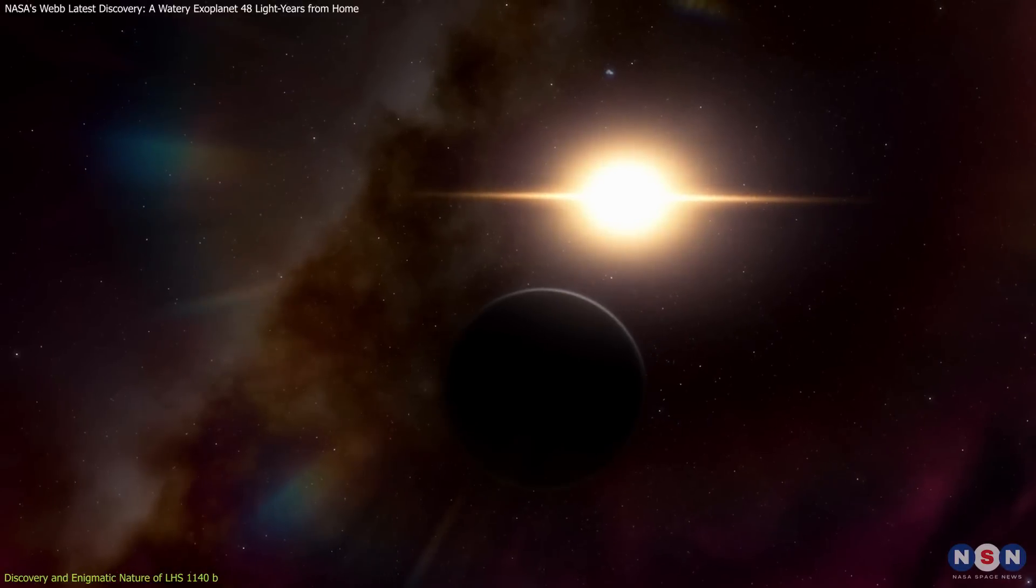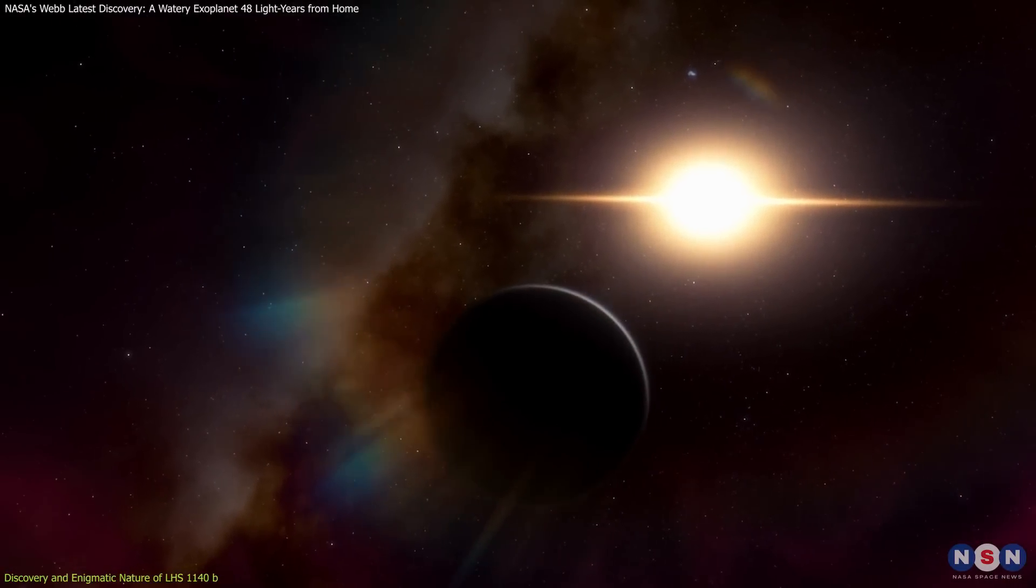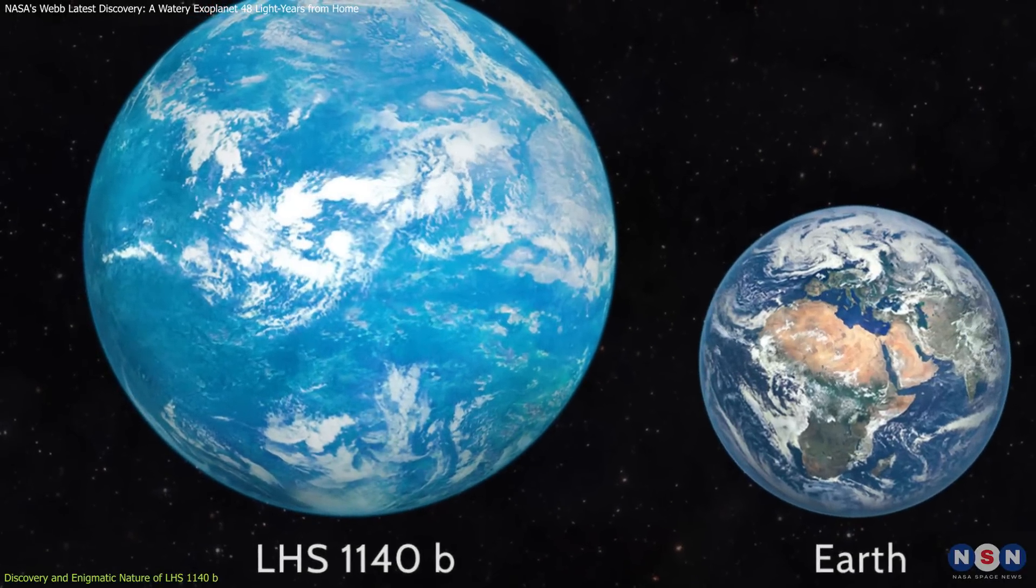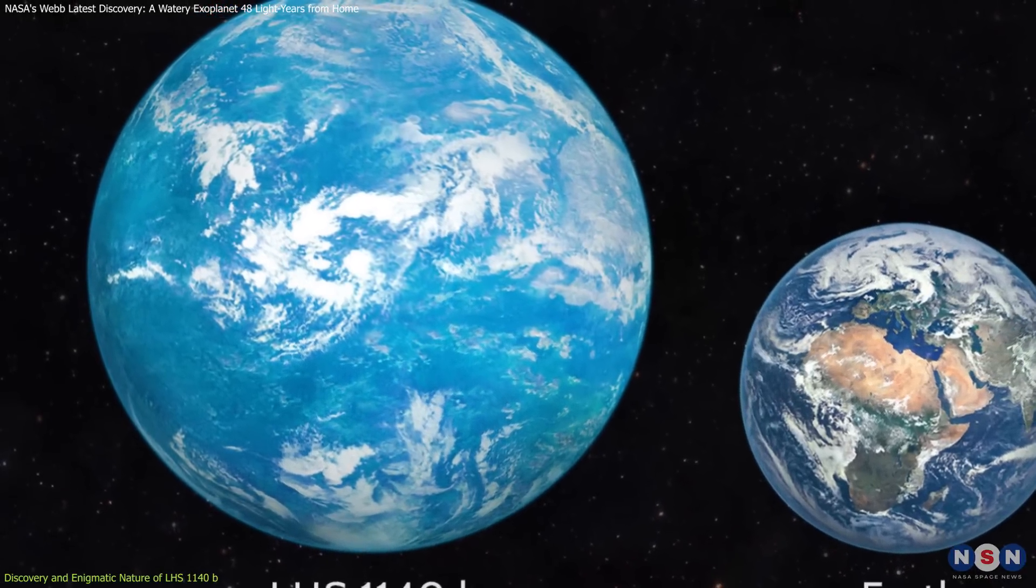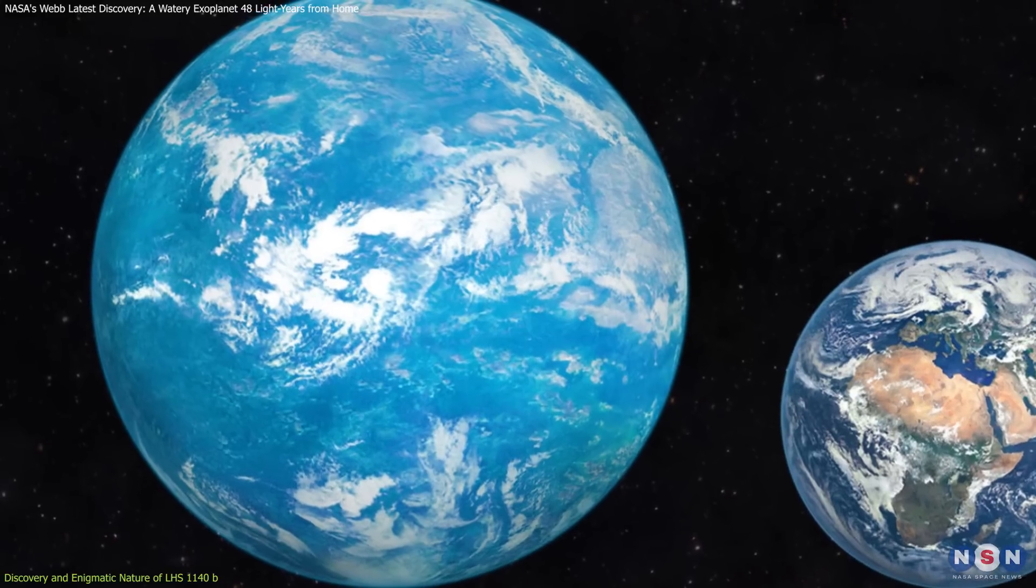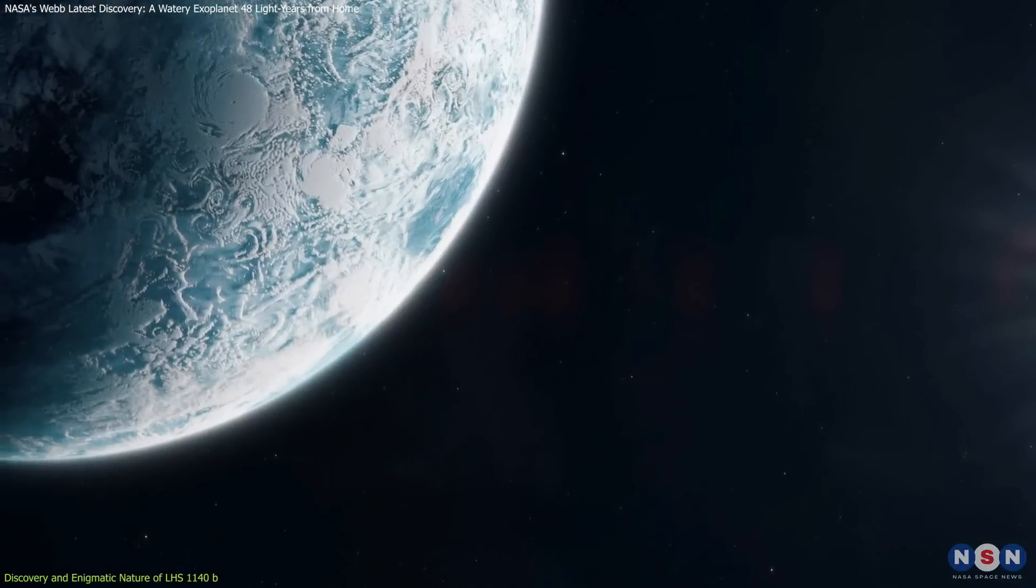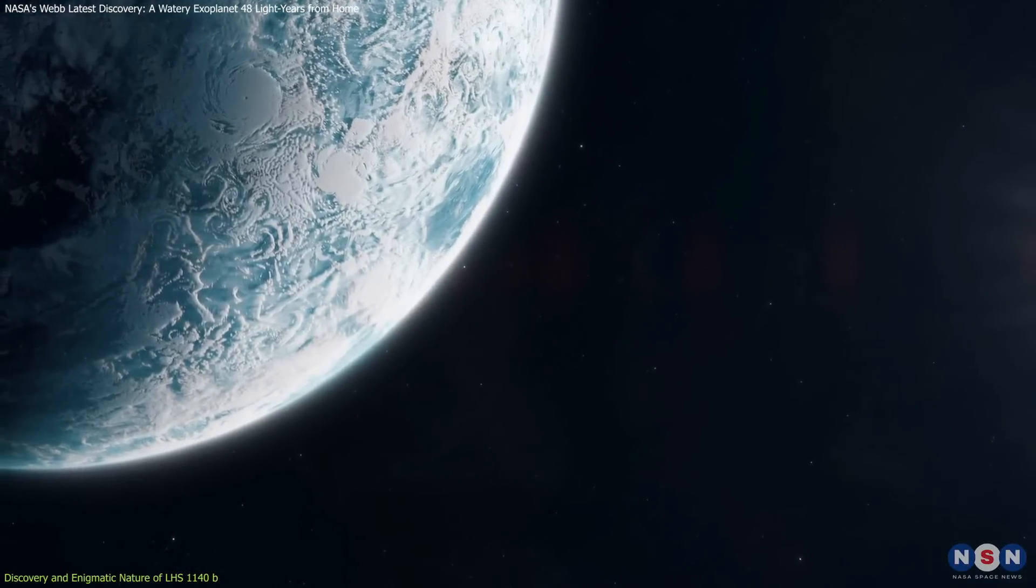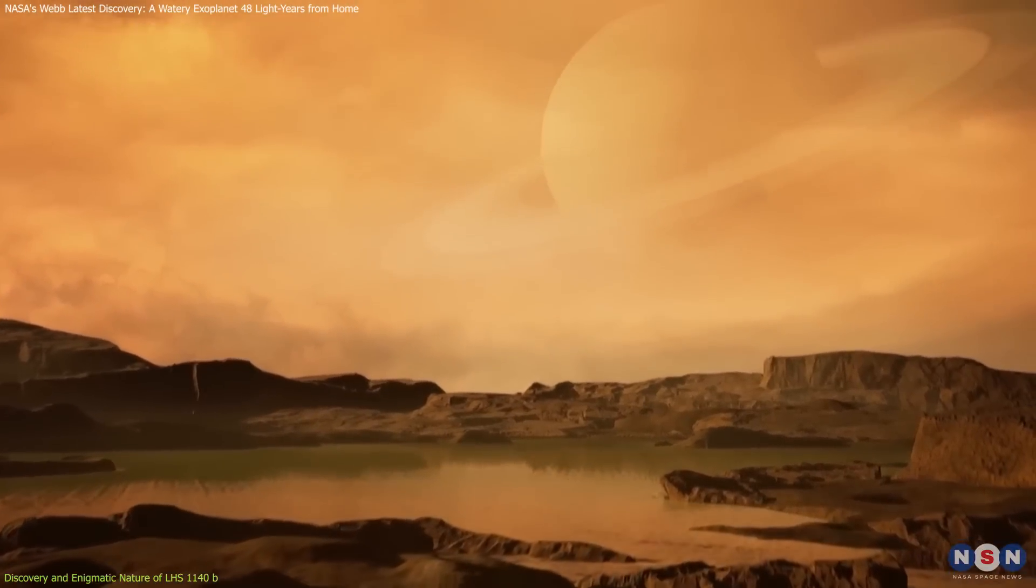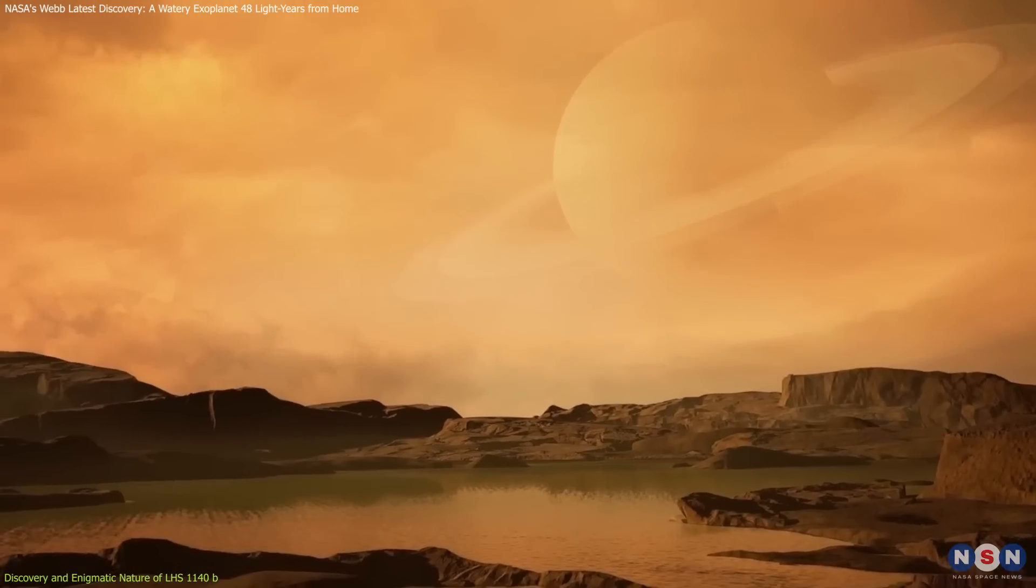The planet's size and mass further complicate the picture. Being 1.7 times the size of Earth and about 7 times its mass, it falls into the category of a super-Earth. These planets are particularly exciting because they could have thick atmospheres and potentially support water in various forms, from vapor to liquid to ice.